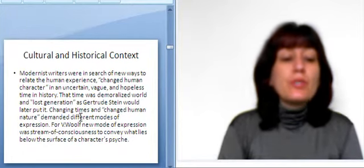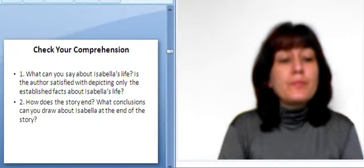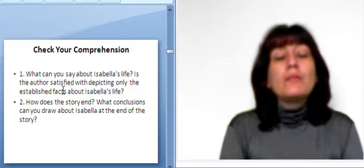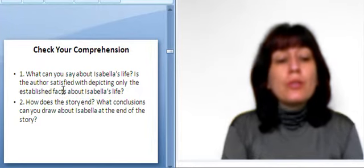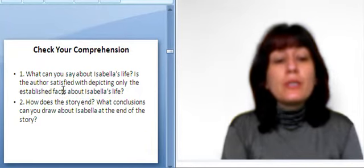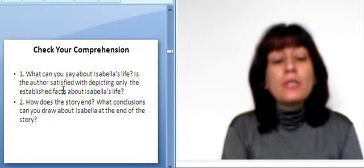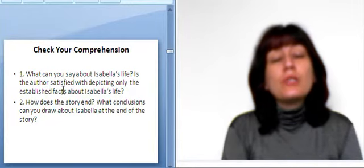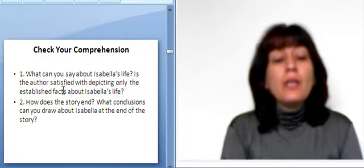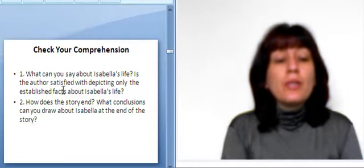Now check your comprehension. What can you say about Isabella's life? Is the author satisfied with depicting only the established facts about Isabella's life? How does the story end? What conclusions can you draw about Isabella at the end of the story?